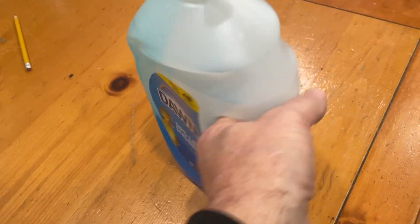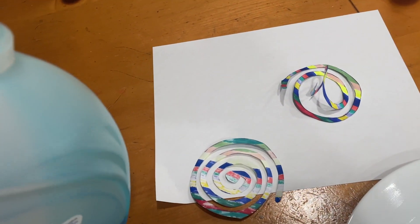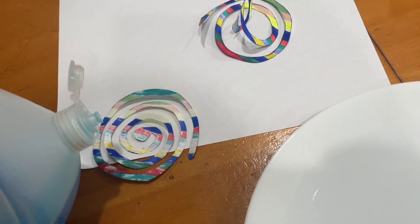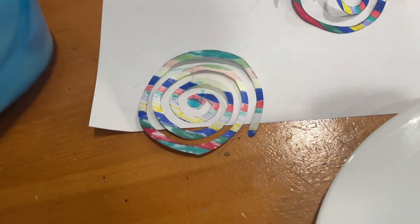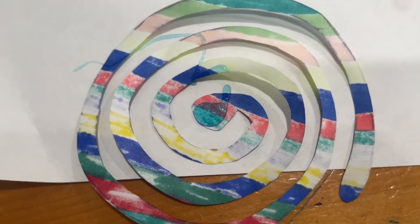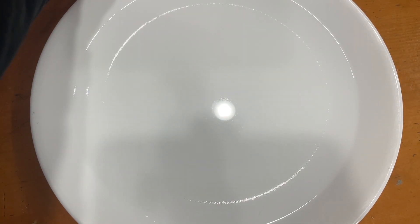Take some Dawn soap or any kind of dish soap and make sure you only get it on that middle dot right there. That's why it's important to use this one. Put a little dish soap right there, and then you're going to flip it upside down and place it in the center of the dish. That's when the fun begins.